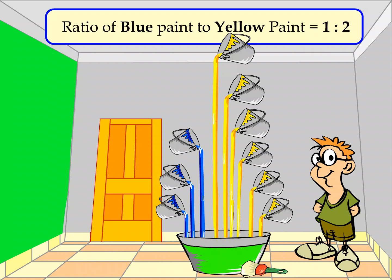In order to get the same shade of green, he added six buckets of yellow paint, which is twice as much as the blue paint. We can say that Jack makes more blue and yellow paints in the same ratio — that is, 1 is to 2.